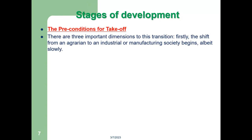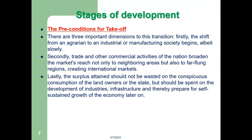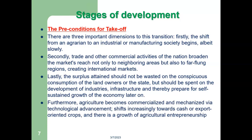There are three important dimensions to this transition in the preconditions for take-off. Firstly, the shift from an agrarian to an industrial or manufacturing society begins. Secondly, trade and other commercial activities of the nation broaden the market's reach not only to neighboring areas but also to far-flung regions, creating international markets. Lastly, the surplus attained should not be wasted on the conspicuous consumption of the landowners or the state, but should be spent on the development of industries and infrastructure, thereby preparing for self-sustained growth of the economy later on. Furthermore, agriculture becomes commercialized and mechanized via technological advancement, shifts increasingly towards cash or export-oriented crops, and there is a growth of agricultural entrepreneurship.